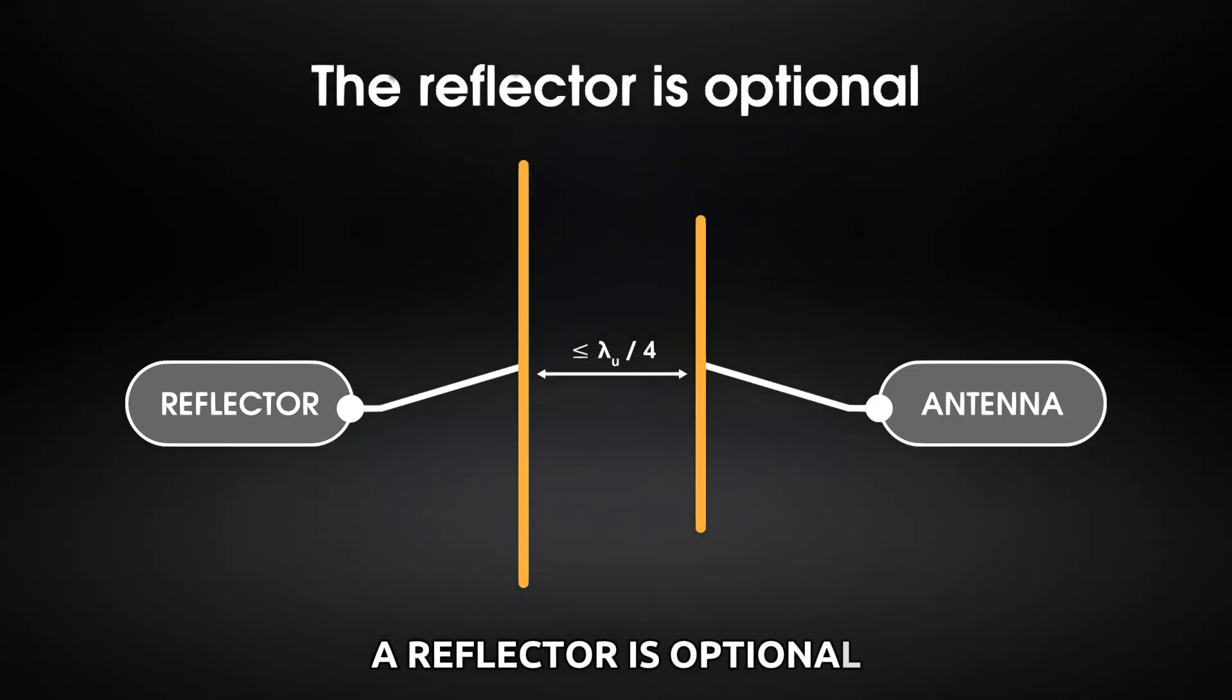A reflector is optional. The antenna works perfectly without it. However, if you want to make it directional, place the reflector behind the antenna at a distance of no more than a quarter of the upper frequency wavelength. Let's summarize the process.